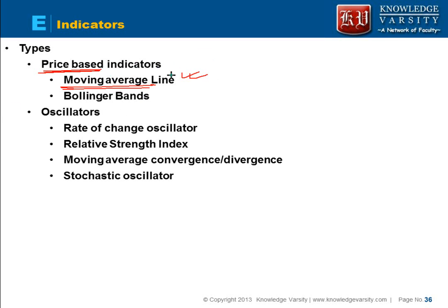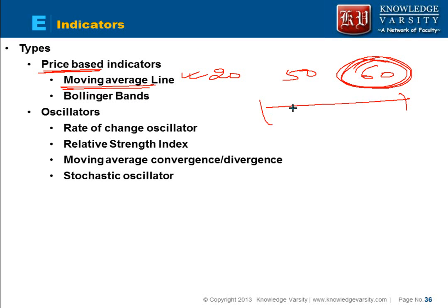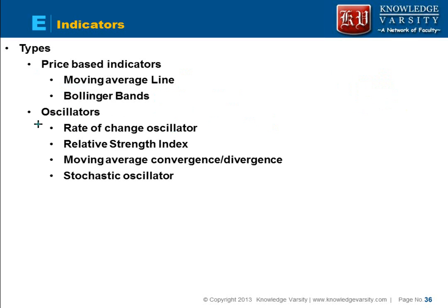You can take a 20-day moving average, a 50-day, or a 60-day moving average. The average is based on the average price of the stock over the past 60 days. Then you have a Bollinger Band, which creates a band around the moving average. There are also oscillators, which use complex mathematical formulas to help us find out how the stock price is moving.